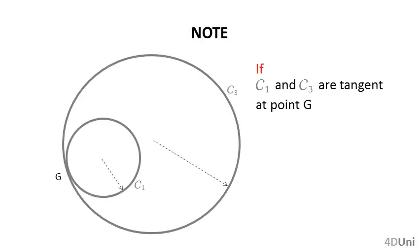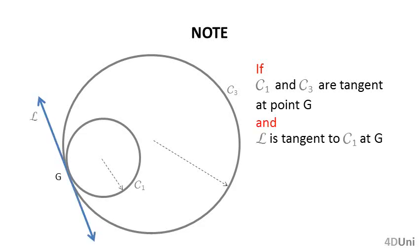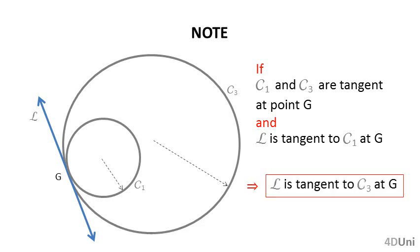Before we continue, let's see a simple but important note. If we have two tangent circumferences, say circumference C1 and C3 tangent at point G, and a straight line L tangent to one of the circumferences — say to circumference C1 at the point of tangency G — then the straight line L is necessarily tangent to the other circumference, that is to circumference C3 in the figure.